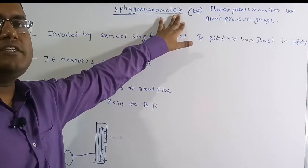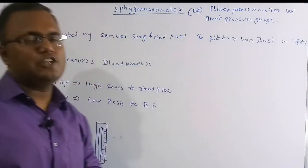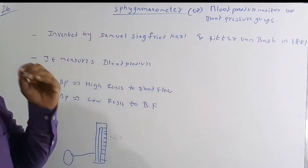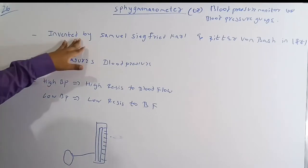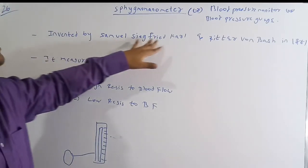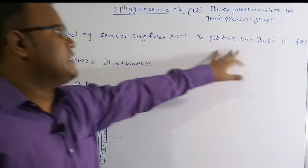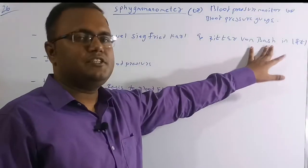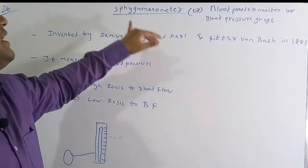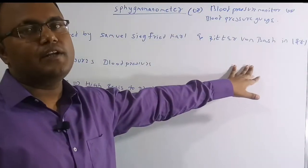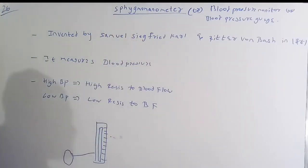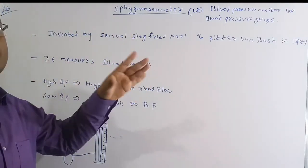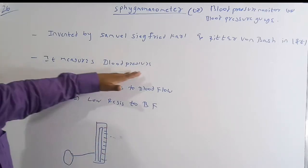The sphygmomanometer is also called a blood pressure meter or blood pressure gauge. This instrument was invented by Samuel Siegfried von Basch and a co-inventor in 1881. The main function of the sphygmomanometer is to measure blood pressure, also known as arterial pressure.